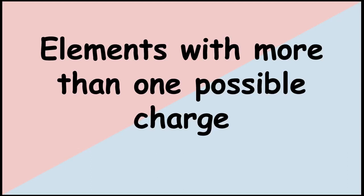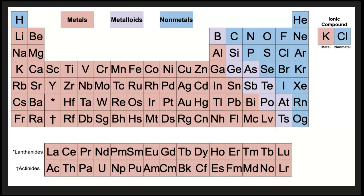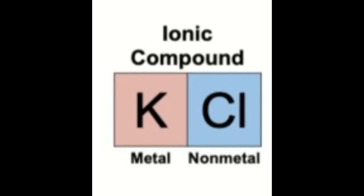We're going to be talking about the elements with more than one possible charge. Here I have a periodic table showing you where the metals and non-metals are. Something you need to know about the metals is that they are always cations. And non-metals are always anions. Whenever we write the formula for an ionic compound, we always put the metal first and the non-metal second.